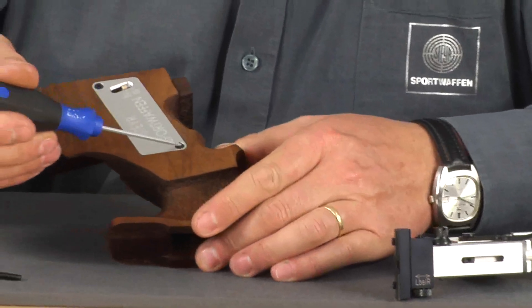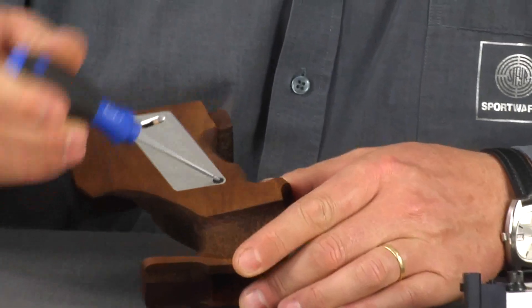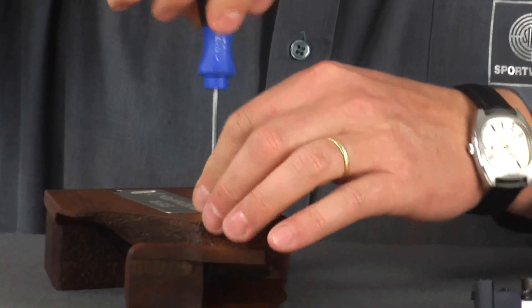Then open the cover plate using a 2mm allen key to remove the screws. The plate can then be lifted off.